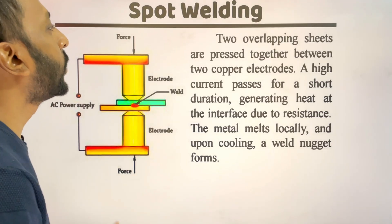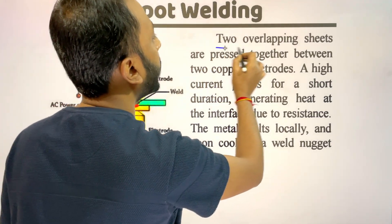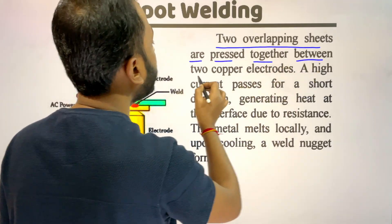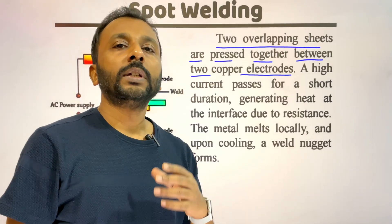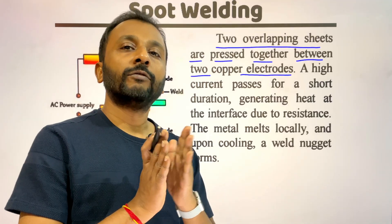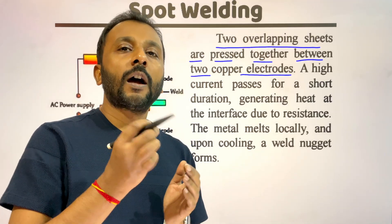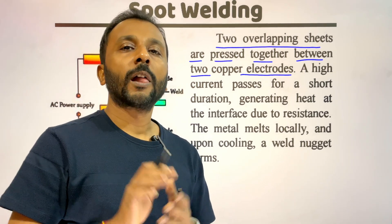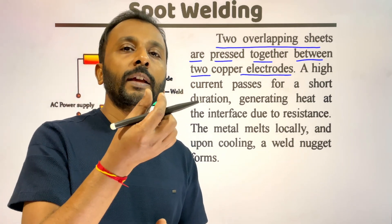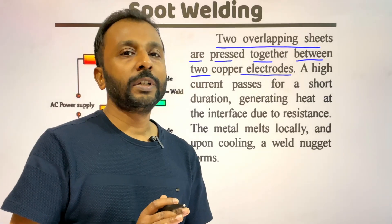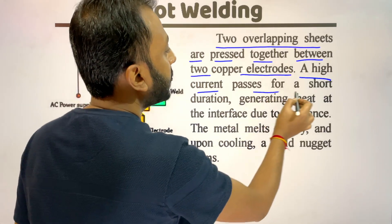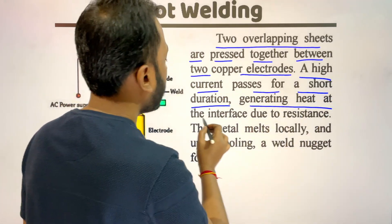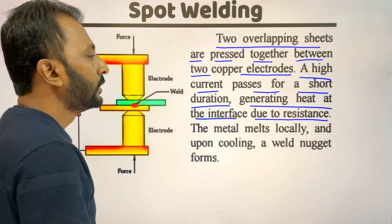The first one is spot welding process. In spot welding, two overlapping sheets are pressed together between two copper electrodes. We use AC power supply to generate heat between the plates and press the plates by the application of force. After some time the contact area of the plates will be fused in a very small area, and after solidification we get the welding joint. A high current passes for a short duration, generating heat at the interface due to resistance.